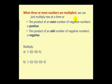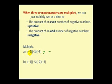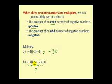When 3 or more numbers are multiplied, we can multiply two at a time following the rules already discussed. Alternatively: the product of an even number of negatives is positive, and the product of an odd number of negatives is negative. For example, part A has 3 negative numbers — 3 is odd, so the product is negative, and 2 times 3 times 5 equals 30, giving negative 30. Part B has 4 negative numbers — 4 is even, so the product is positive, and 1 times 5 times 2 times 3 equals 30, giving positive 30.